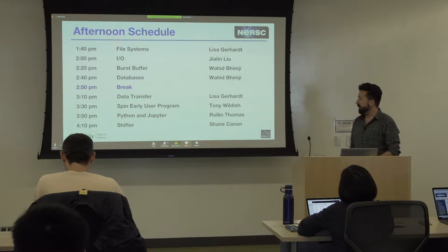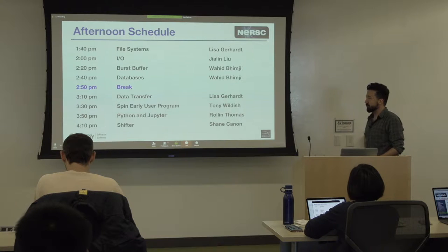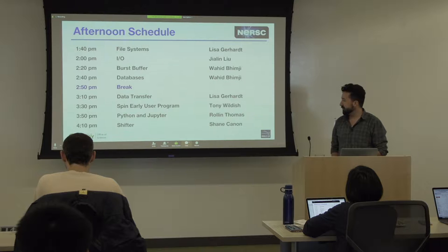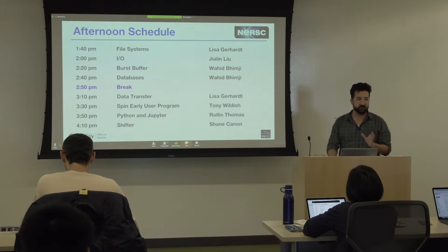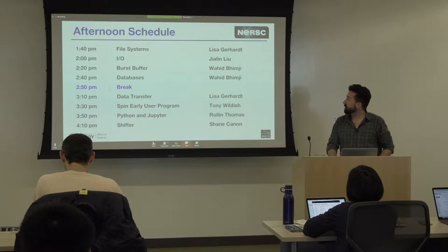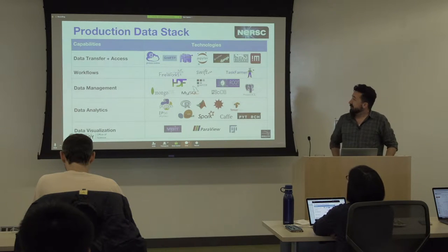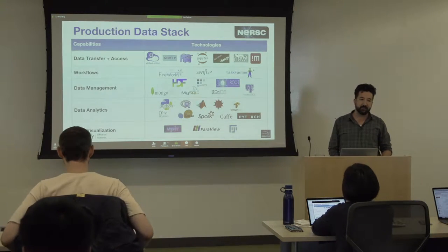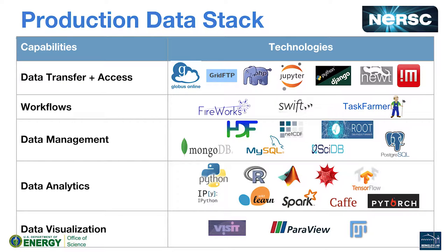There will also be a talk about science gateways, and a little bit about analytics because Python and Jupyter are a pretty important part of the data ecosystem. And then at the end we'll talk about workflows and Shifter. All these talks are just 20 minutes, with one 10-minute talk and a break in the middle. In a single day we can't really cover absolutely everything in the data ecosystem, so we have to pick and choose which things are most important for new users to know about, and point you at the documentation and other tools.